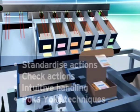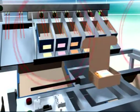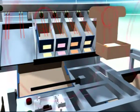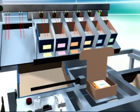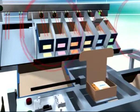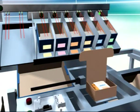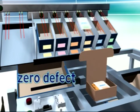An example of this is the picking matrix solution. The system indicates which parts should be used. If the operator makes a mistake, he will be warned until the mistake is corrected. This approach will lead to a zero defect quality level.